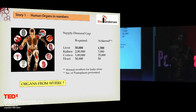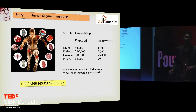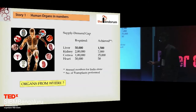Let's begin with a small story of human organs in numbers. This is the data for India alone. What you can see is that the liver, kidney, cornea, heart, et cetera — what we require are a lot more than what we actually can manage. So right now what we do is we take organs from each other.